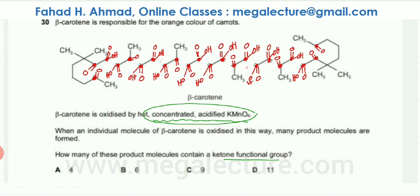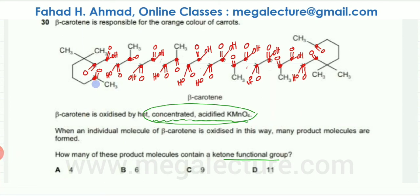Now look at the number of molecules produced — lots and lots of fragments. The question asks how many product molecules contain a ketone functional group. It's a very time-consuming question, though with enough practice you can quickly identify the ones with ketone functional groups. I'm going to start marking a star in front of each ketone functional group.